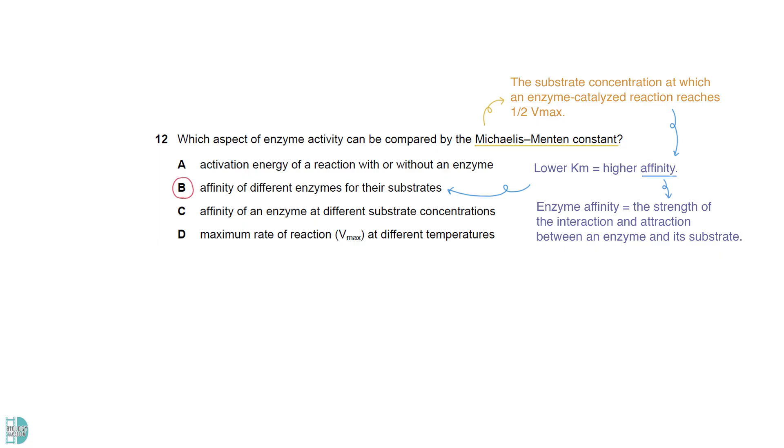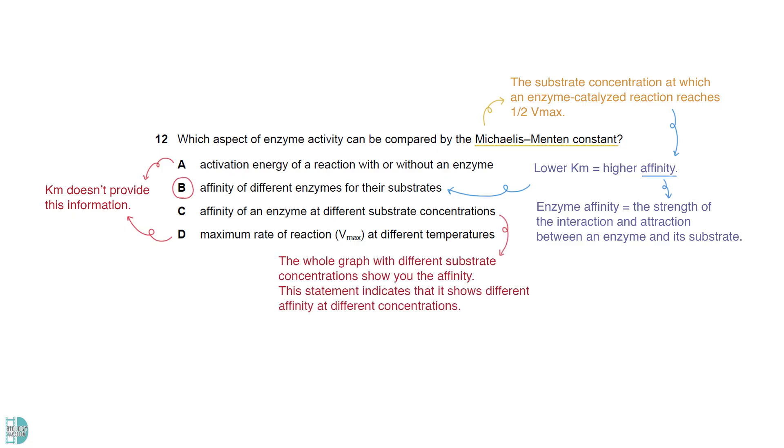Enzyme affinity refers to the strength of the interaction and attraction between an enzyme and its substrate. A and D are incorrect because Km doesn't provide this information. C is wrong because the whole graph with different substrate concentrations shows you the affinity. This statement indicates that it shows different affinity at different concentrations.